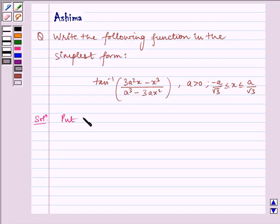Put x is equal to a tan theta. Then x by a is equal to tan theta. Therefore, theta is equal to tan inverse x by a. Let us name this as equation 1.